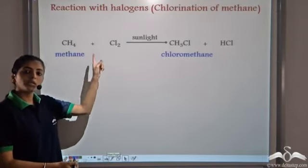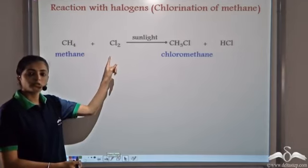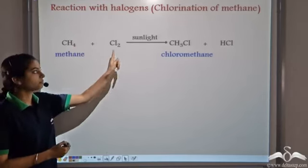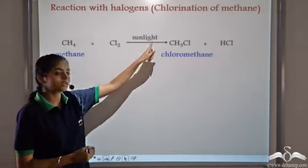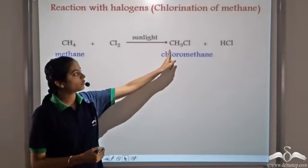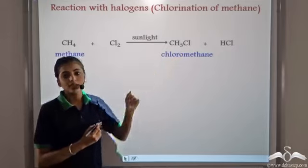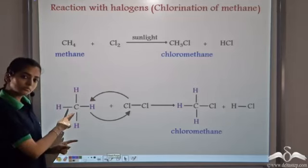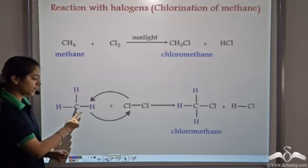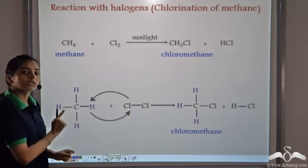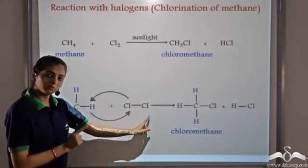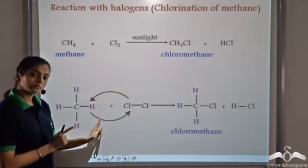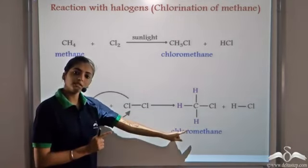Let's look at the chlorination of methane. We have methane reacting with chlorine. One hydrogen atom is replaced by one chlorine atom, and this requires the presence of sunlight. It forms CH3Cl and HCl is liberated. We can write methane showing all hydrogen atoms bonded to the carbon atom by single covalent bonds. When a Cl2 molecule reacts, one chlorine replaces one hydrogen atom, giving chloromethane plus HCl.